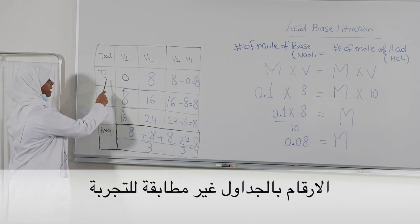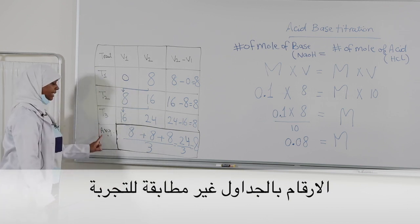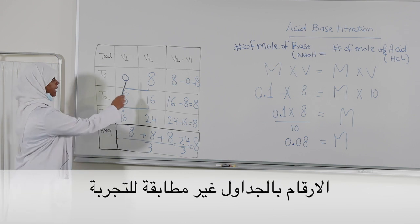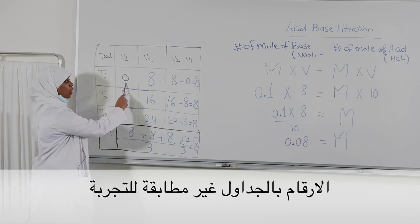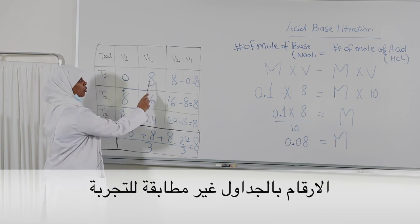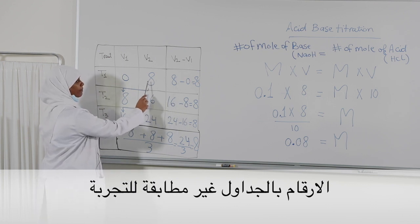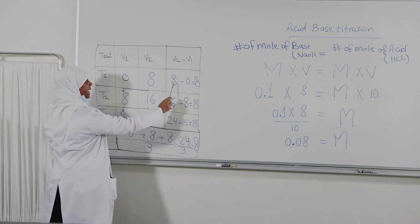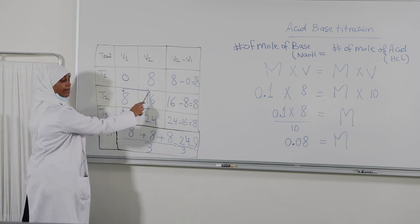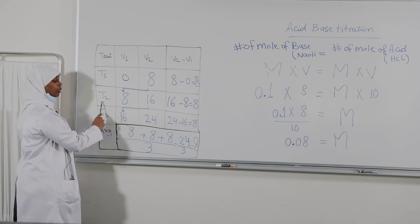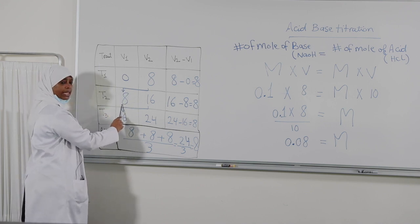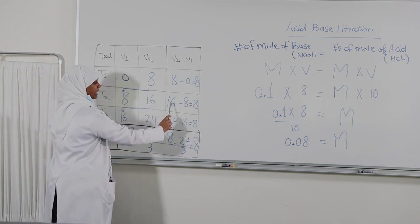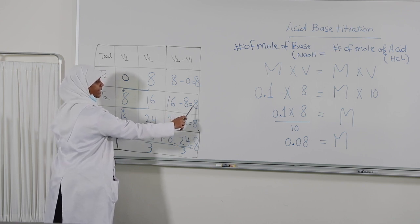We repeat the experiment three times to get three readings, then take the average to confirm accuracy. We start the burette from zero; the color appears at 8, so Volume 2 minus Volume 1 gives 8−0 = 8. That reading becomes the initial reading for the second trial. We started from 8, and the experiment stopped at 16, giving a difference of 16−8 = 8.